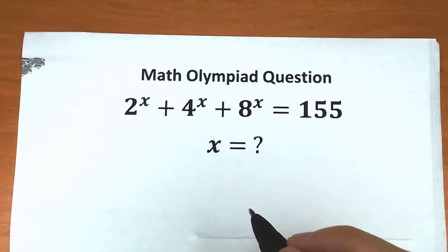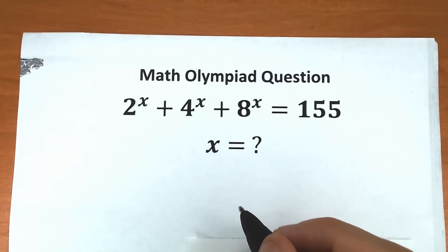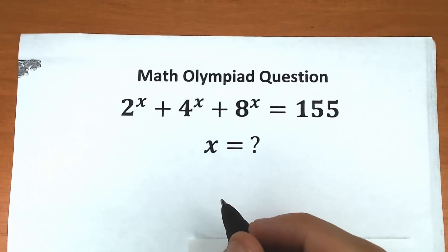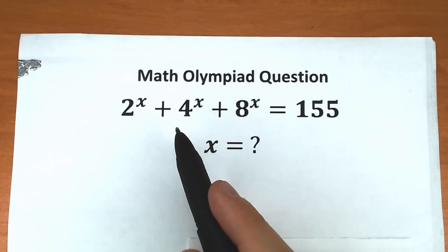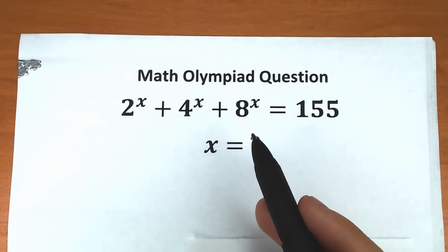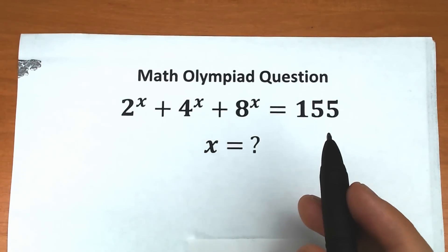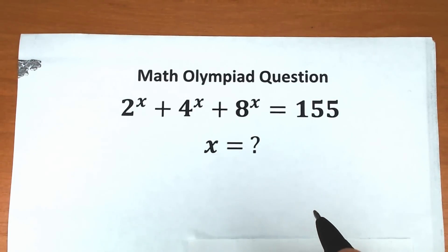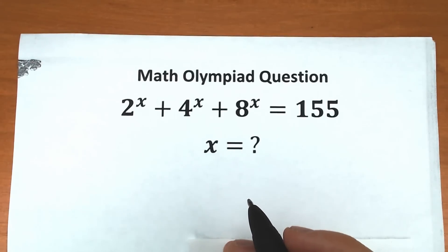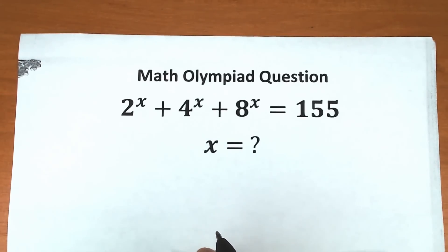Welcome back to my channel, higher mathematics. We have a really interesting exponential equation today: 2 to the x plus 4 to the x plus 8 to the x equals 155. In this video I'm going to fully explain how you can solve this correctly, step by step.